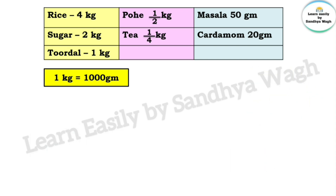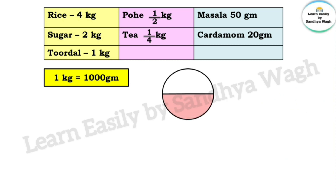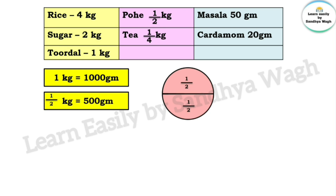1 kg is equal to 1000 grams. Half a kilogram is equal to 500 grams.